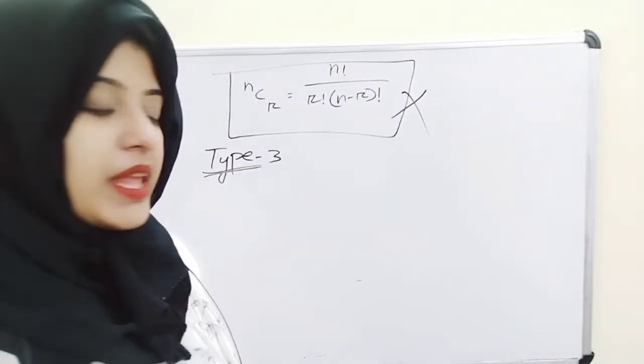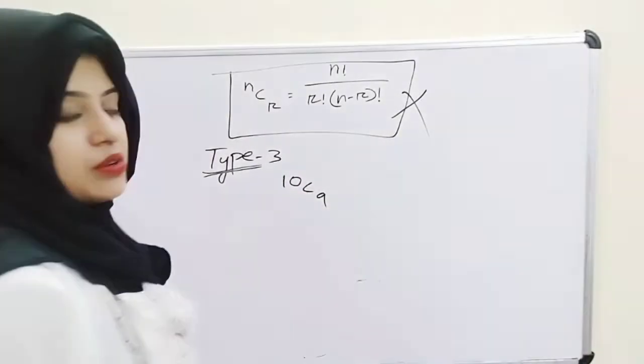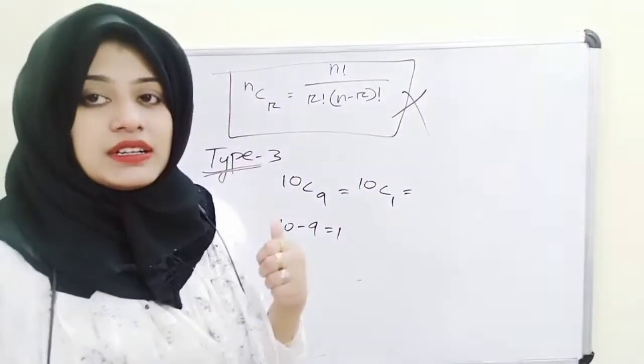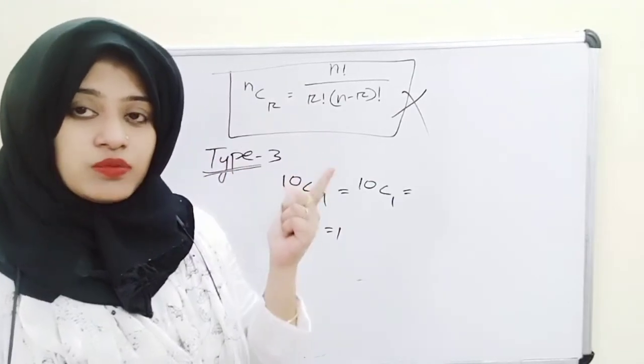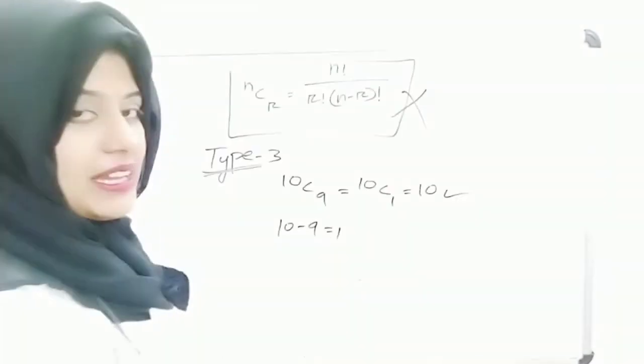Type 3: if your question is 10C9, first subtract — 10 minus 9 equals 1 — then rewrite it as 10C1, because the answers are equal. Now apply Type 1: since r is 1, the answer is n, so the answer is 10.